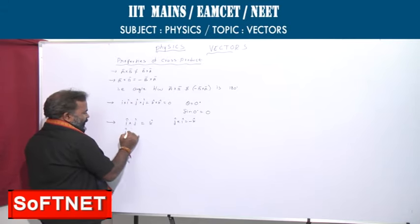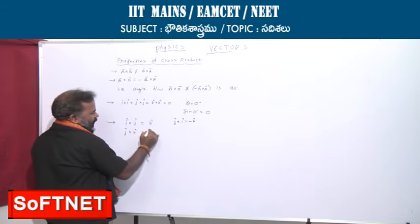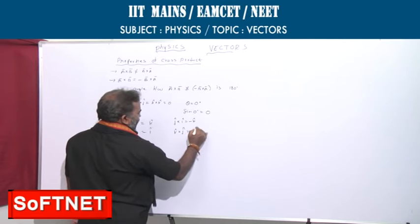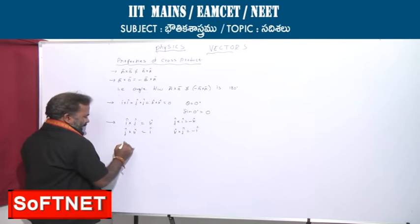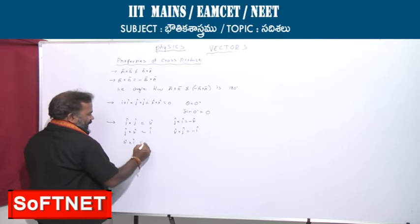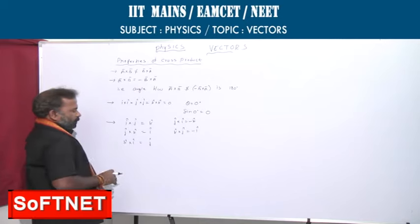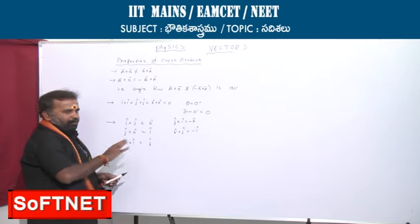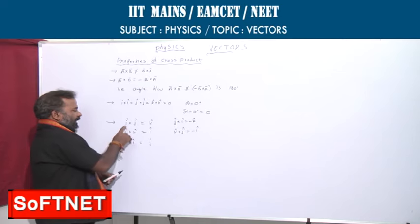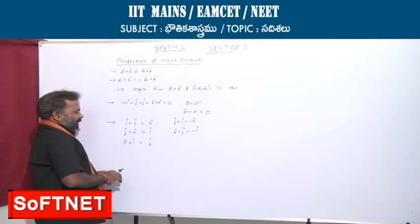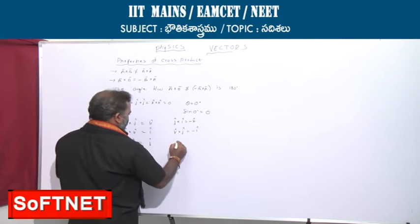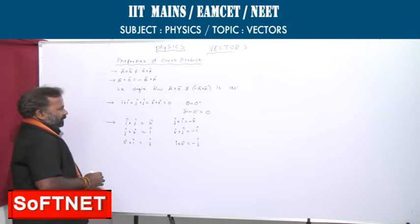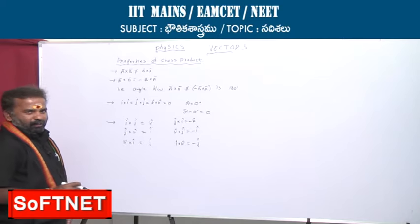ĵ cross k̂ is equal to î, whereas k̂ cross ĵ is equal to minus î. k̂ cross î is equal to ĵ. So we have seen: î×ĵ = k̂, ĵ×k̂ = î, k̂×î = ĵ — this is a cyclic process and you should not miss the order. If we change: î cross k̂ is equal to minus ĵ. These are very important properties for cross product.